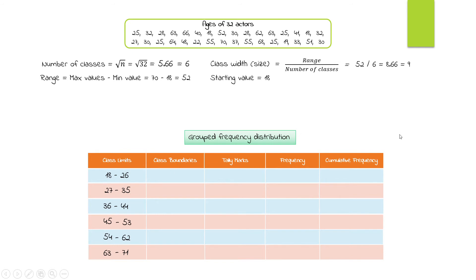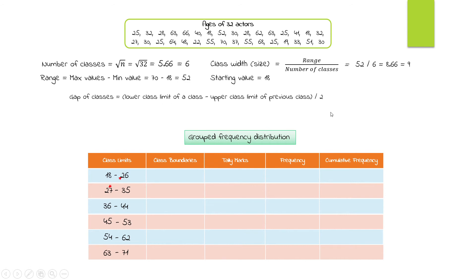To calculate class boundaries, there is a simpler way when dealing with whole numbers. The gap between classes is the lower limit of one class minus the upper limit of the previous class: 27 minus 26 equals 1, divided by 2 gives 0.5. That is the gap. The lower class boundary equals the lower class limit minus the gap, so 18 minus 0.5 gives the first lower class boundary of 17.5.